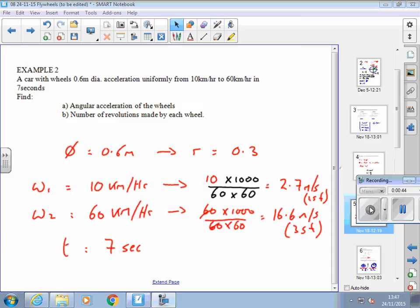And so, we get these figures, 2.7 metres per second for omega 1, 16.6 for omega 2. We know the time is 7. And so, now we've got what we've been given in the right units.